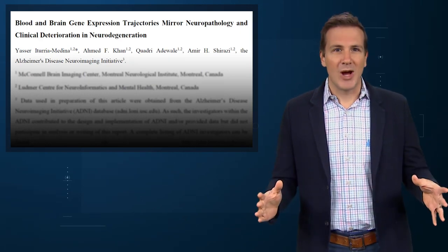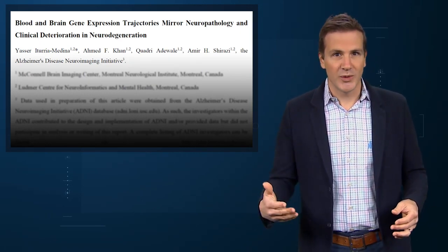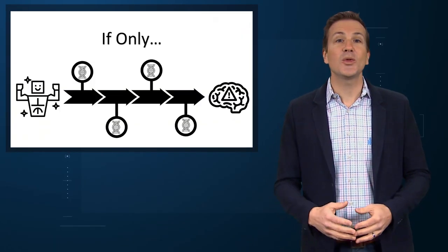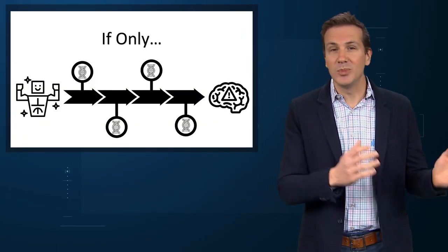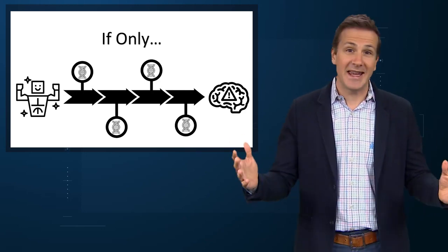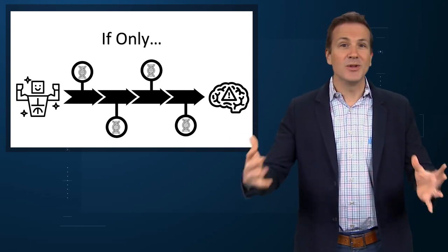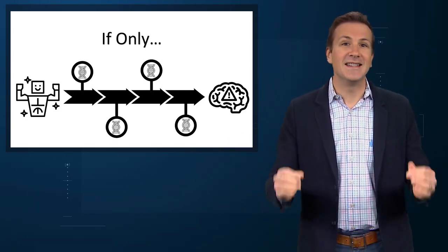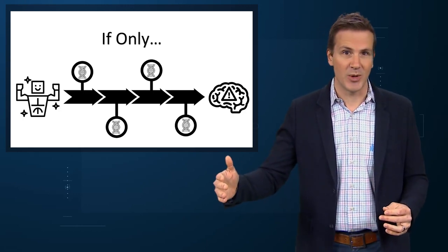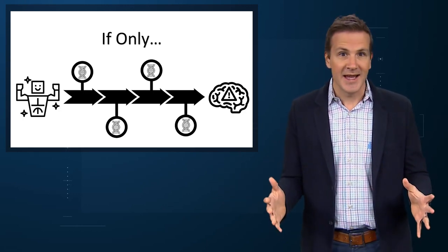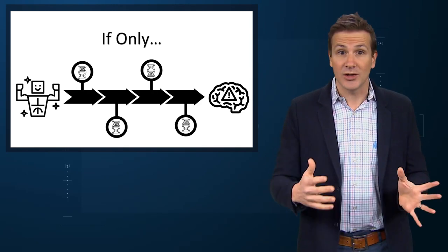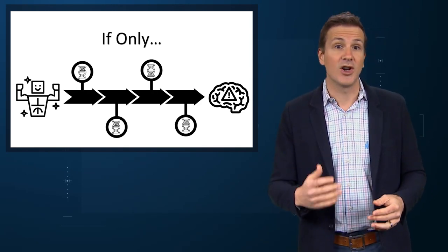One of the major problems in neurodegenerative disease research is a lack of big longitudinal data sets. If resources were unlimited, we could follow blood gene expression profiles for tens of thousands of people for decades, see who develops neurodegenerative diseases, and gain a deep understanding of the longitudinal changes in gene expression that might drive the disease. That information could not only give us a new prognostic tool, but could identify therapeutic targets too.